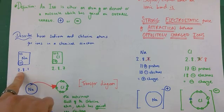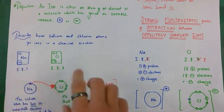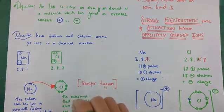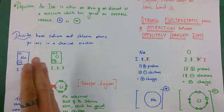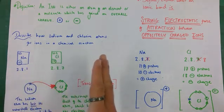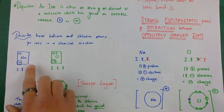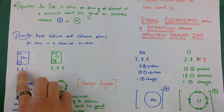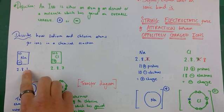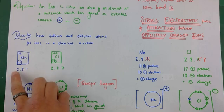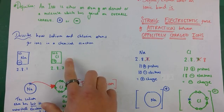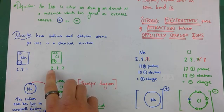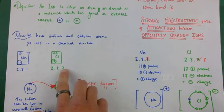We can then consider their electron configurations, remembering that electrons are arranged in energy levels called shells in the pattern 2, 8, 8, 2. So 11 electrons are arranged 2, 8, 1 - that's sodium's electron configuration. Chlorine's electron configuration is 2, 8, 7.